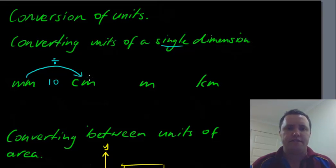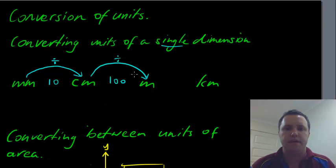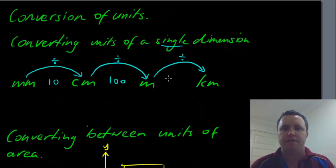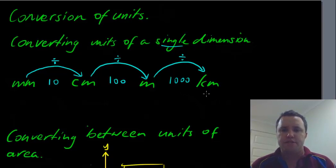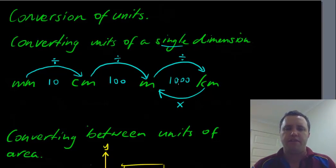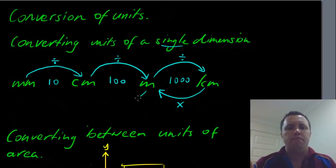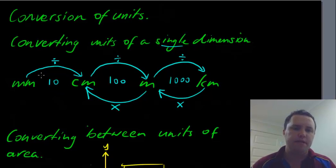To go from centimetres to metres we will divide by 100, because there are 100 centimetres in a metre. And when we're going from metres to kilometres we will divide again — because there are 1000 metres in a kilometre, we divide by 1000. Going the other way: kilometres to metres, one kilometre is 1000 metres, so we multiply by 1000. One metre is 100 centimetres, so we multiply by 100. And one centimetre is 10 millimetres, so we multiply by 10.